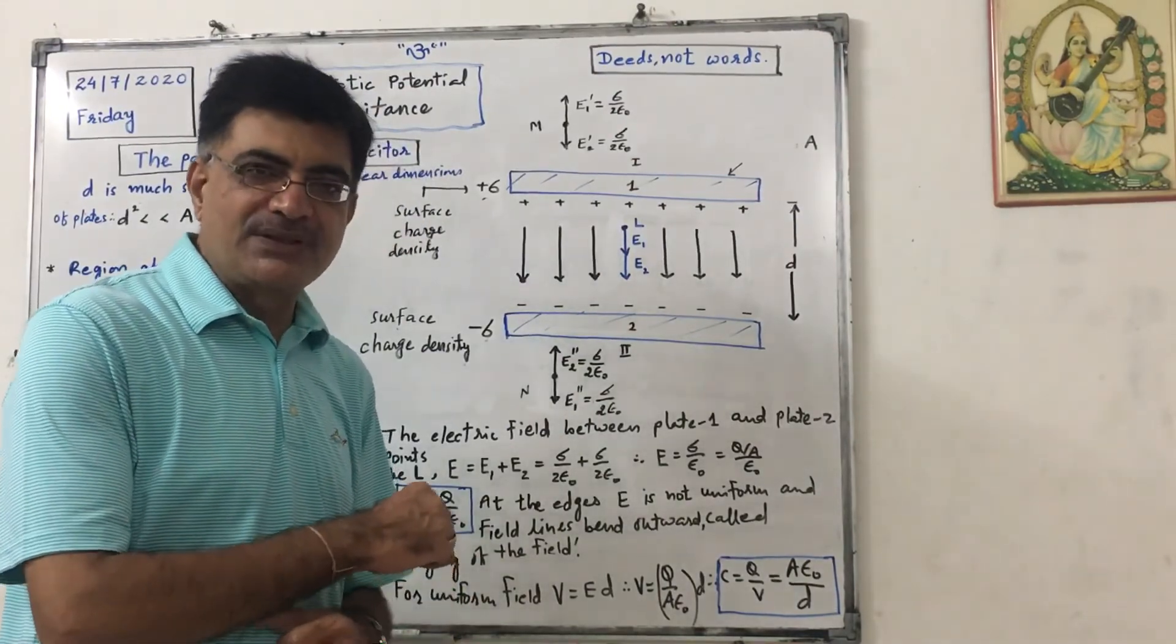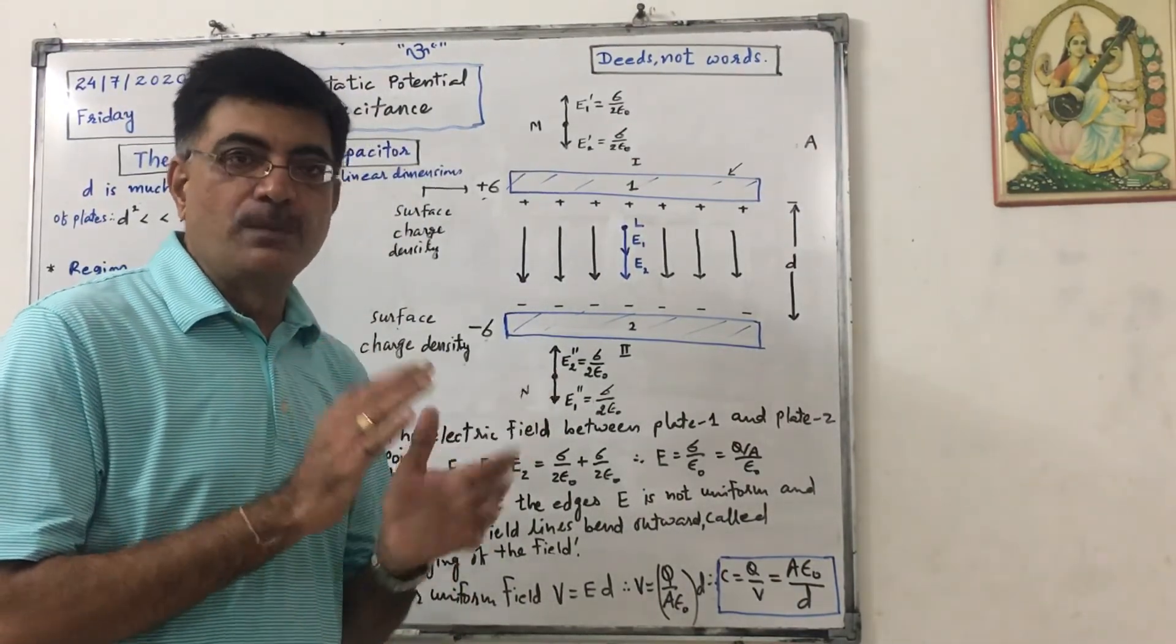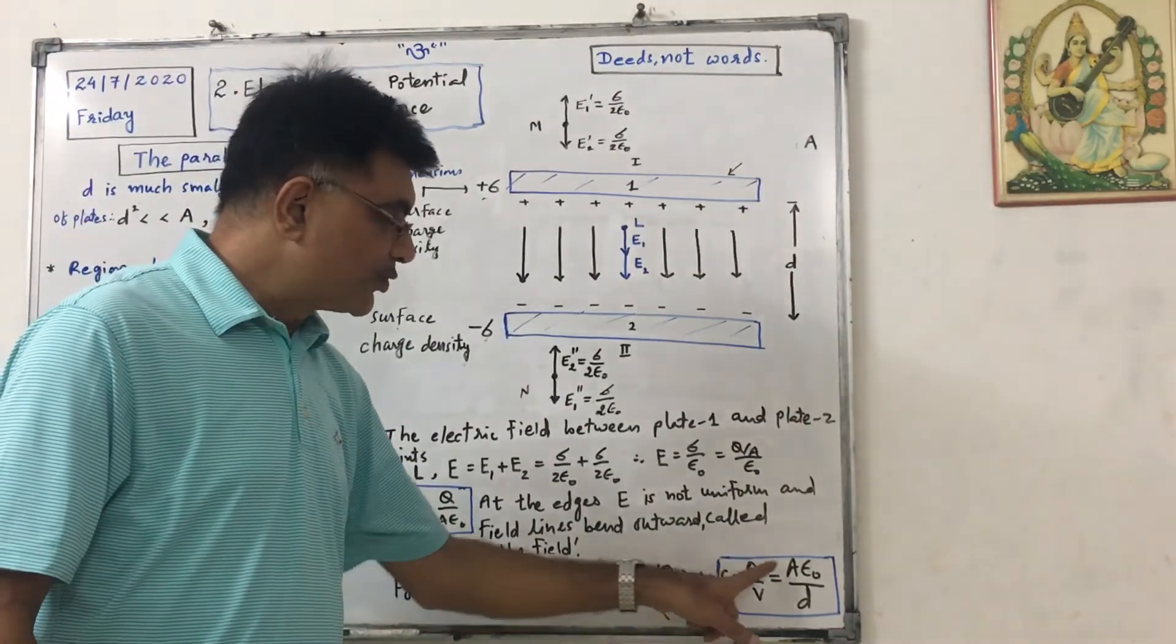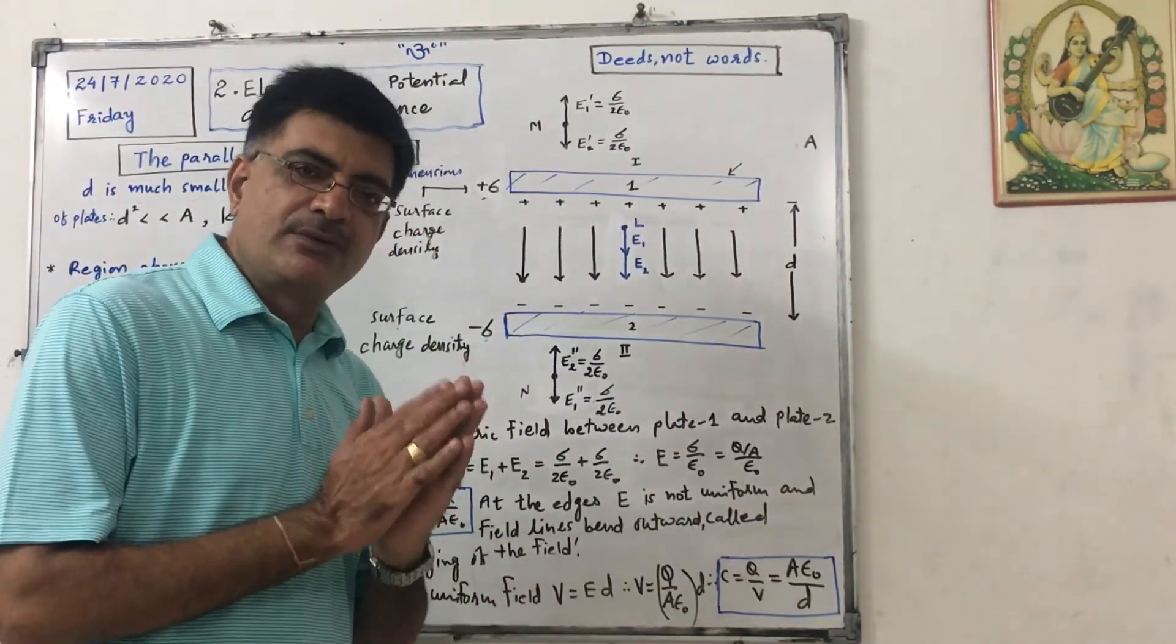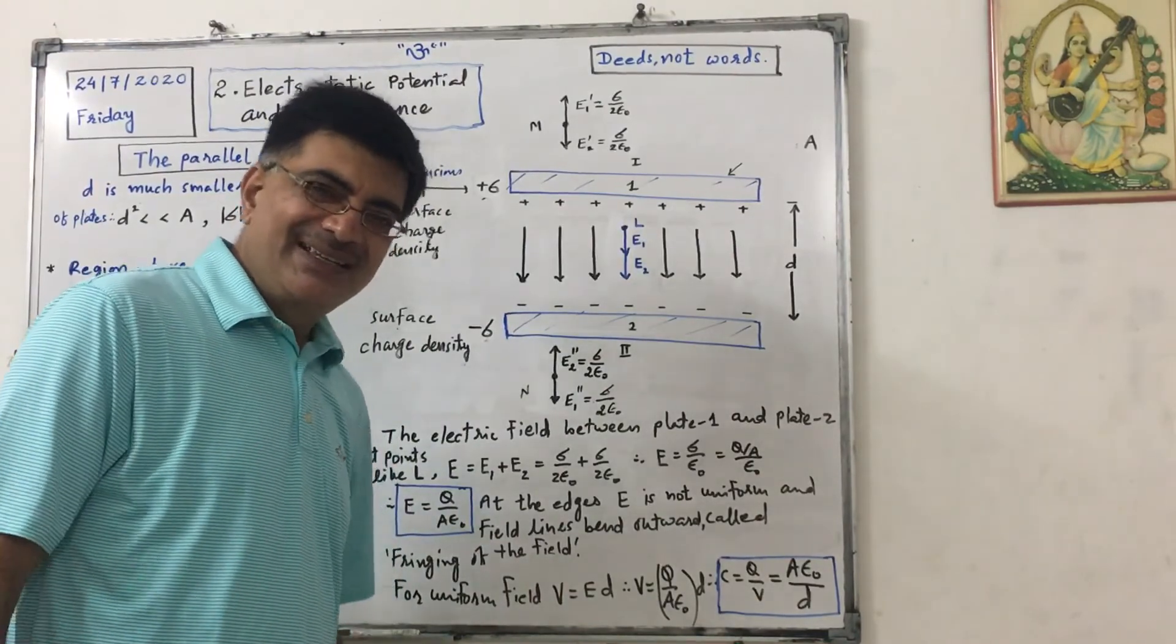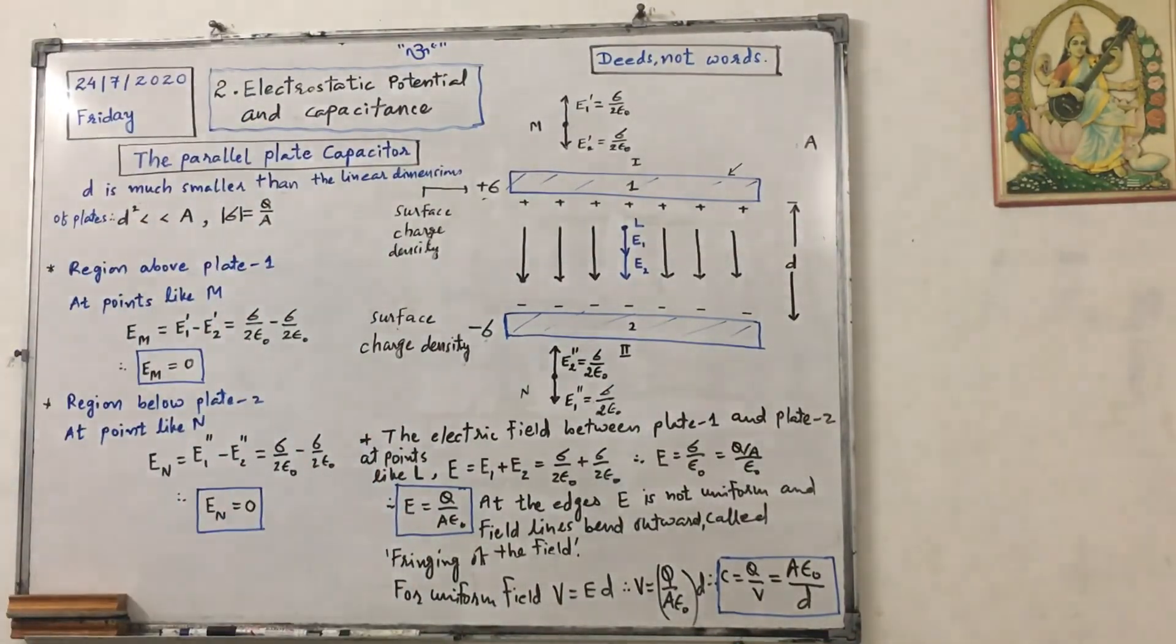So this is for parallel plate capacitance having vacuum between two plates. C is proportional to A. C is inversely proportional to distance between two plates. Take screenshots, prepare well.